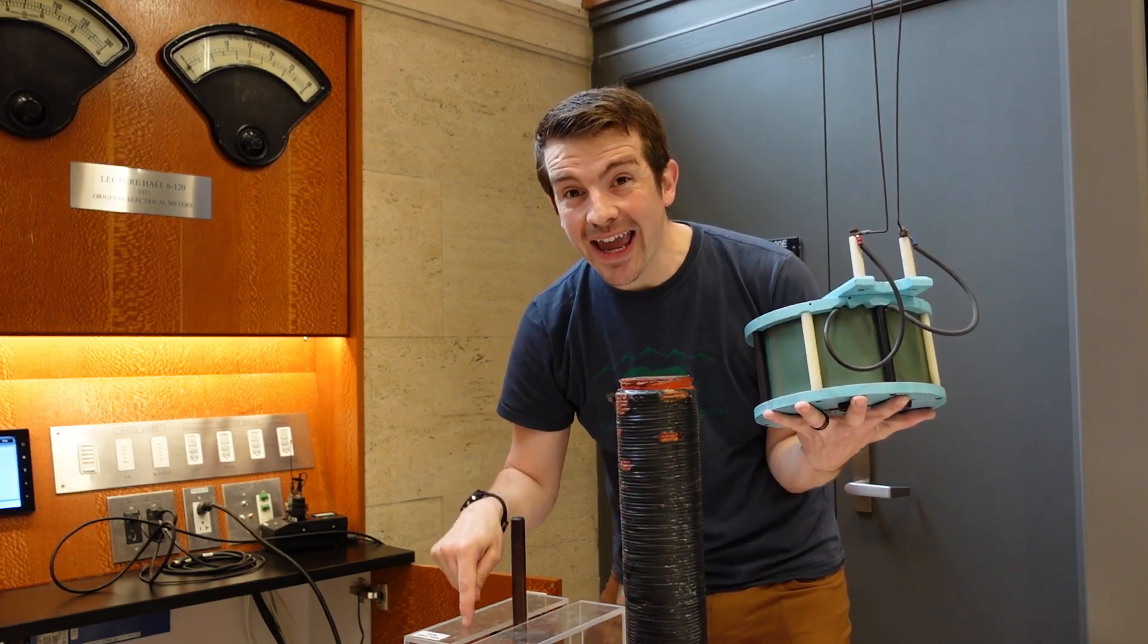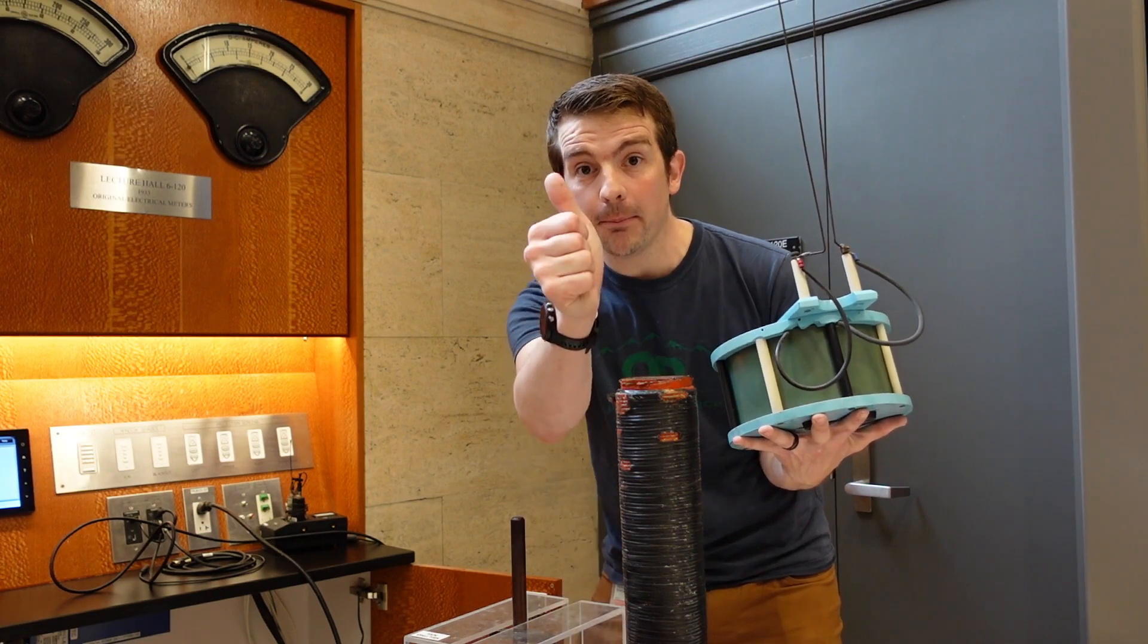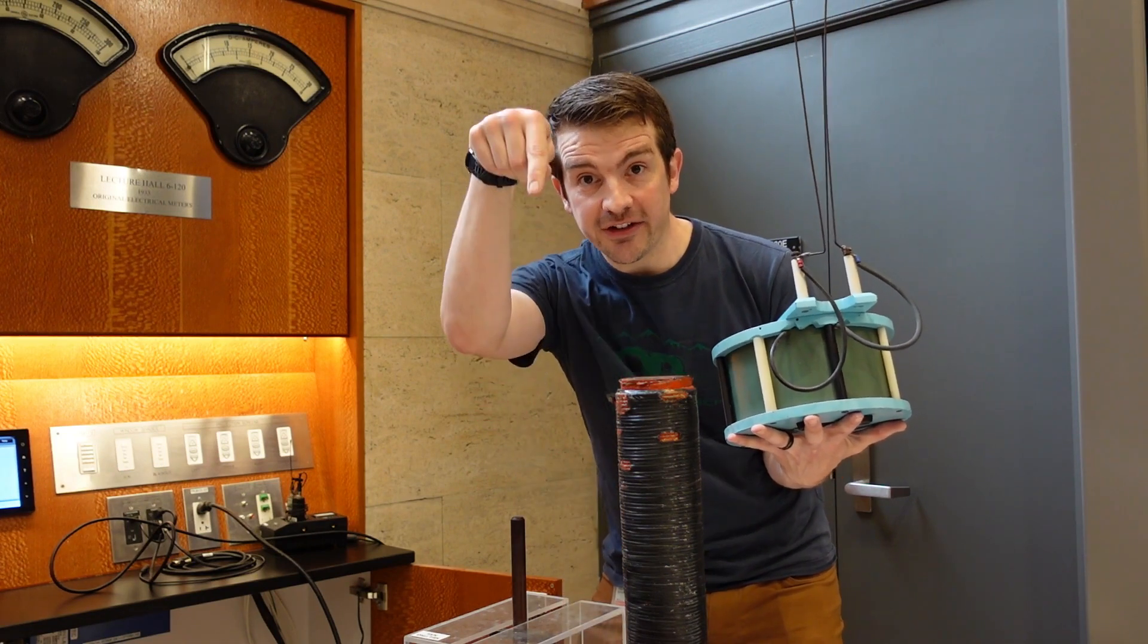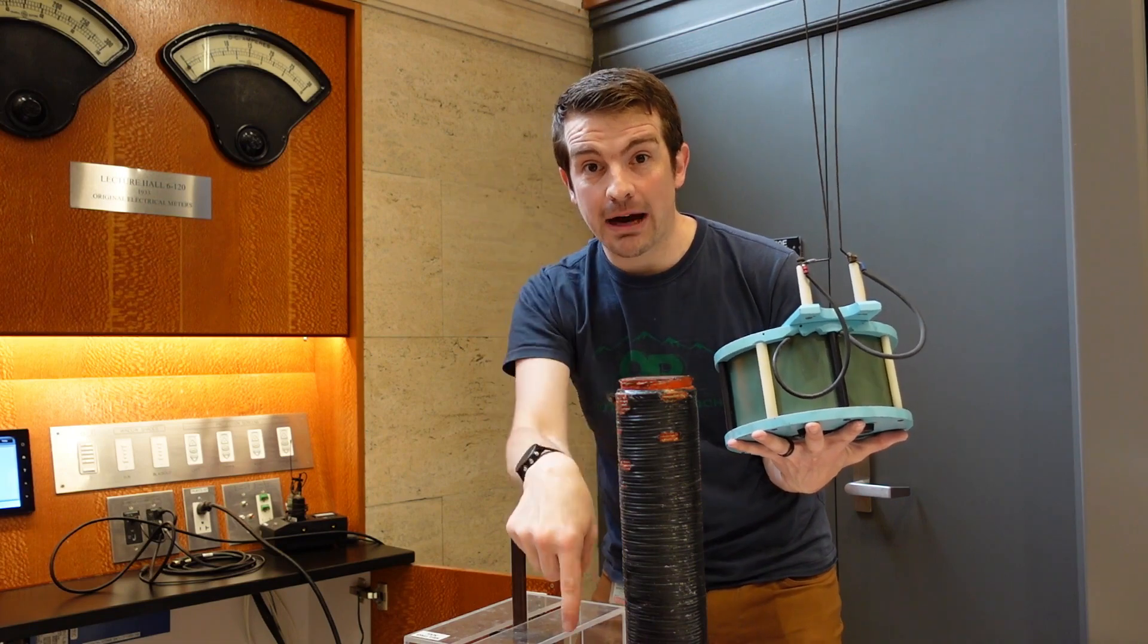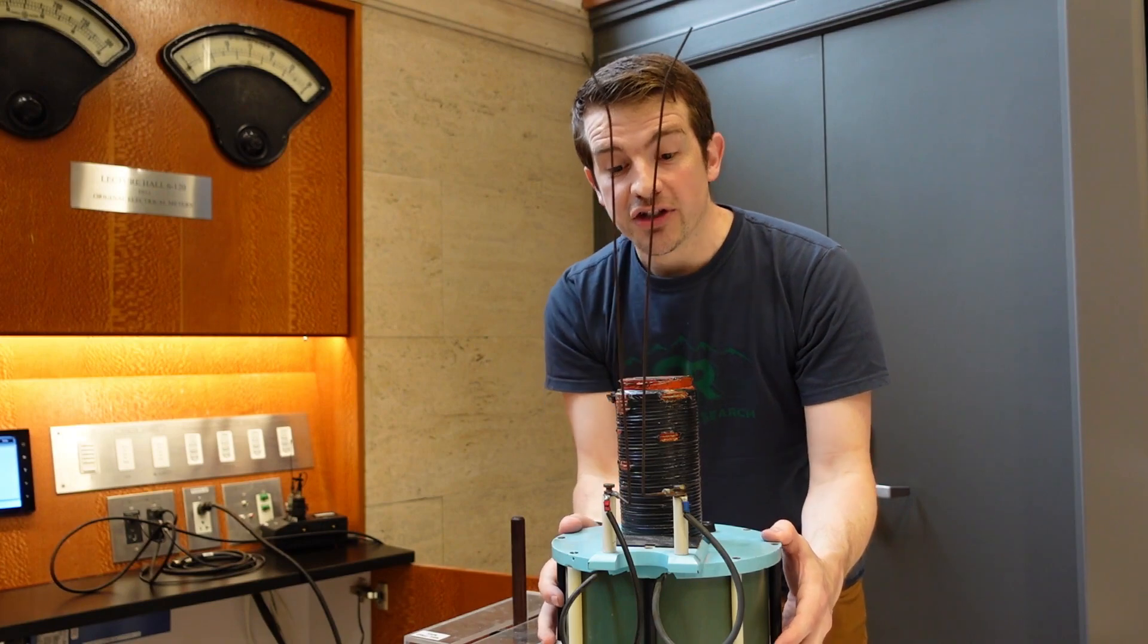A key here is that this is AC current, alternating current, which means the magnetic field is going to be up, then zero, then down, up, zero, down. It does that 60 times a second. 60 hertz is AC.